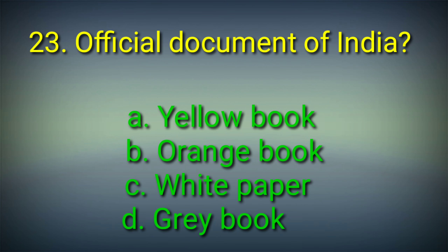23rd question: What is the official document of India? Options: A. Yellow book, B. Orange book, C. White paper, D. Grey book. Answer: Option C. White paper is the official document of India.